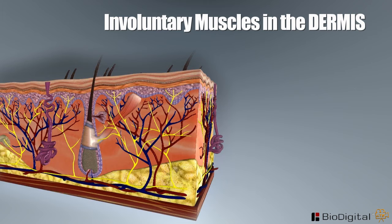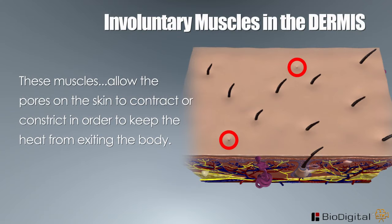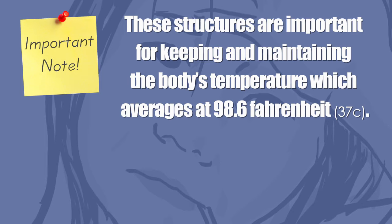Involuntary muscles in the dermis control functions such as lifting hair or opening pores. By dilating or opening the pores in the skin, the body is able to cool off and allow sweat to exit. When the body needs to keep its temperature up to prevent heat loss, these muscles allow the pores in the skin to contract or constrict in order to keep the heat from exiting the body. If it's too cold, these pores can constrict so tightly that they form what is known as goosebumps. These structures are important for keeping and maintaining the body's temperature, which averages at 98.6 degrees.